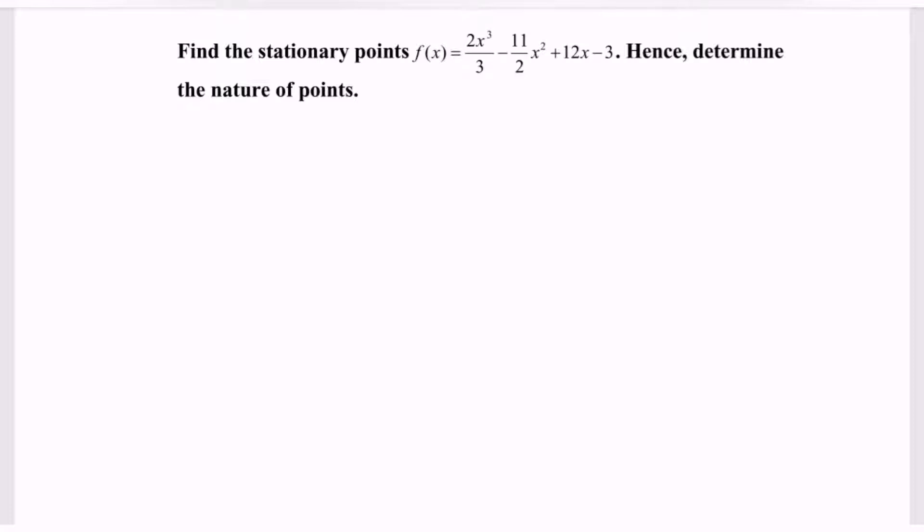So step number one, write down the situation. Where we have y equals 2 multiplied with x to the power 3 over 3 minus 11 multiplied with x square over 2 plus 12x minus 3.